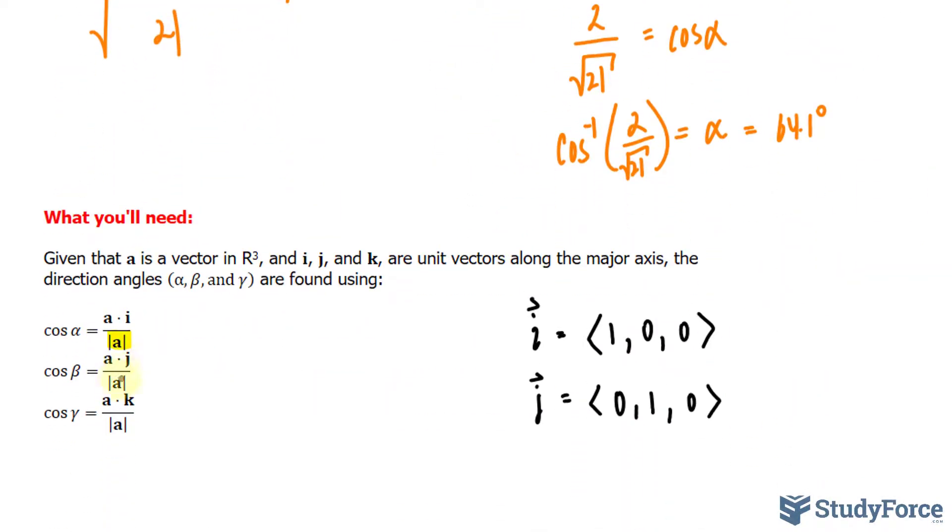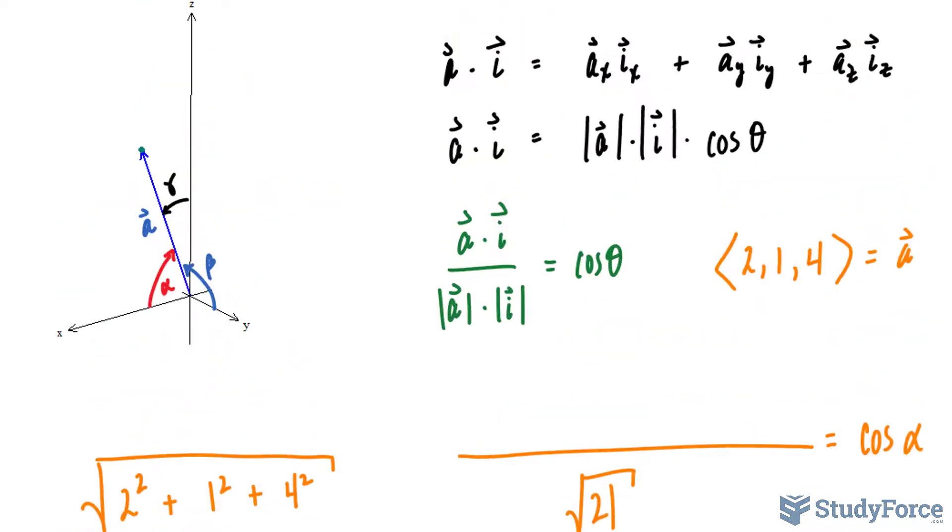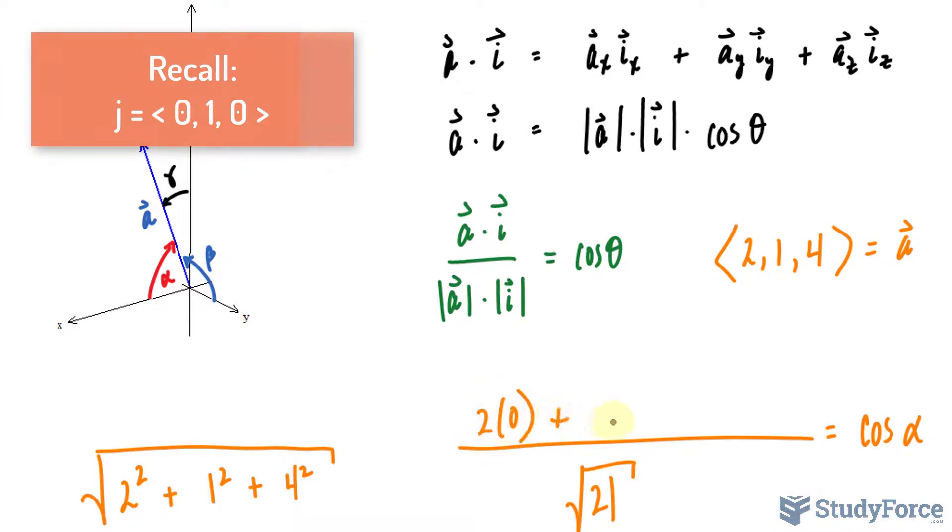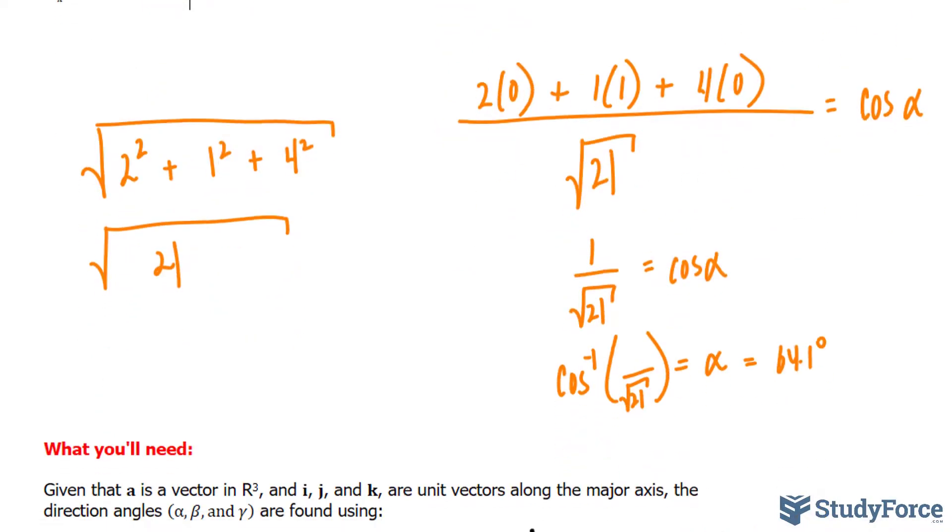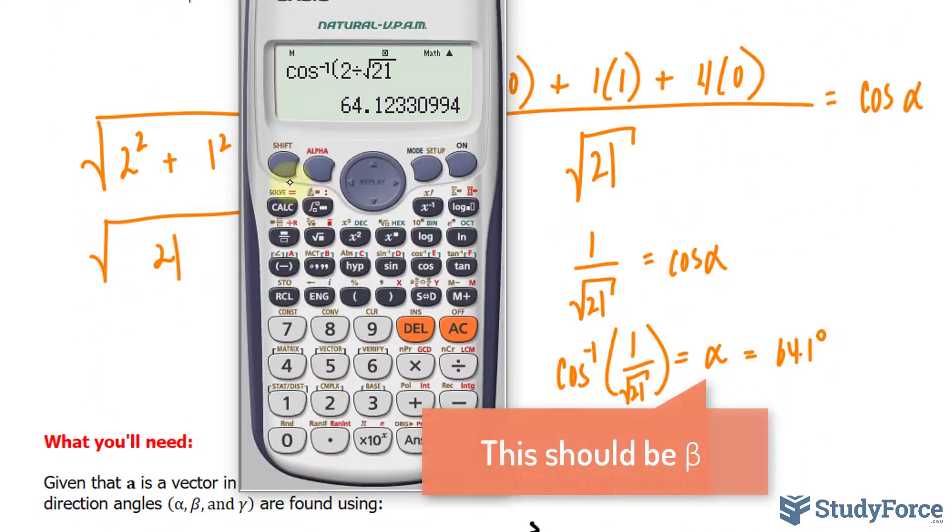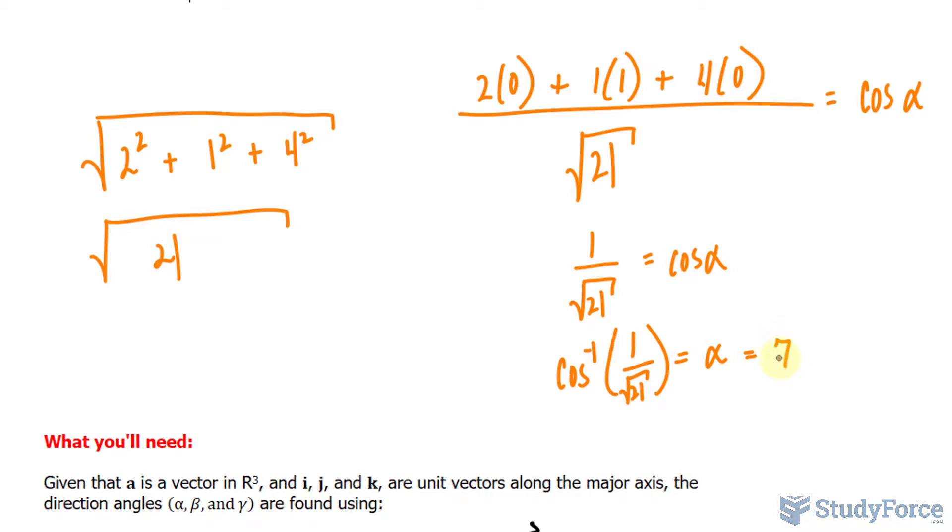Now remember, the denominator will be the same for the other calculations. All I have to do is erase the top, and we'll have different numerators for each calculation, except the square root of 21 will remain. So I'll take 2 times 0 plus 1 times 1 (the y component is 1, and the z component is 0). The numerator simplifies to 1. We have cosine inverse of 1 divided by the square root of 21, which makes an angle of 77.4 degrees.